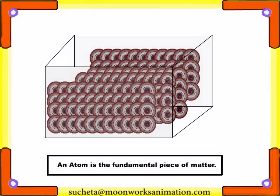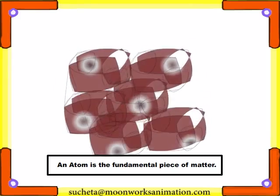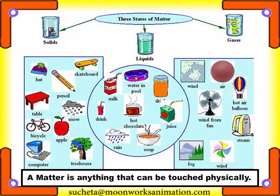Structure of an Atom. An atom is the fundamental piece of matter. Matter is anything that can be touched physically. Like shown here, it can be a pencil, table, or an apple, or liquids like milk, juice, or soup, or gases like steam.